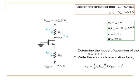Once we have determined that our circuit is working in the saturation mode, we write the appropriate equation for the drain current as shown in the slide. In this equation, we know the drain current because it is given as a design parameter. We know the constant — the process transconductance parameter — and we have also been given the aspect ratio of the MOSFET. The threshold voltage is also known. VGS can be written as VG minus VS.